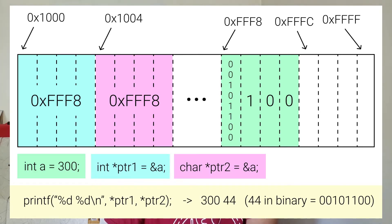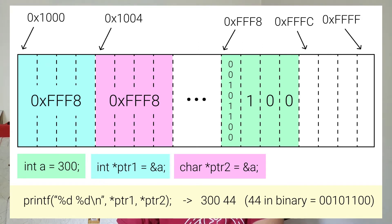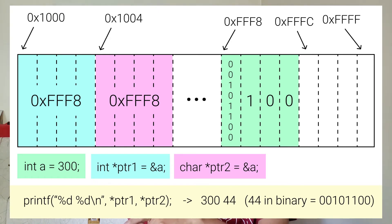Here we have a visual of the memory in our system. We have int a equals 300, and we can see that the computer stored it at address fff8. On a 32-bit system, integers take up four bytes, so we have four bytes allocated for our integer. Next we have a variable called pointer1, and we know that it's a pointer denoted by the star symbol, and we can assign it to the address of a using the ampersand symbol. So now pointer1 has the value fff8.